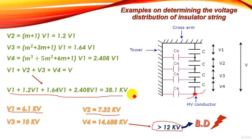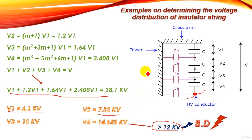This is an important problem and we need to find a solution. We need to improve the string efficiency and achieve uniform, equal voltage distribution across the insulator string. This will be the topic of the next lecture, where we will see how to improve string efficiency and equalize voltage distribution. See you in the next lecture.